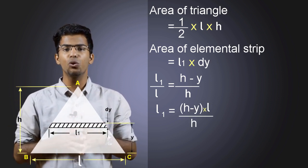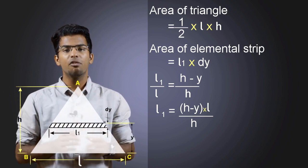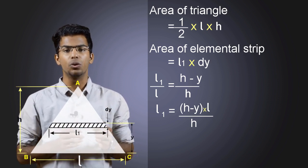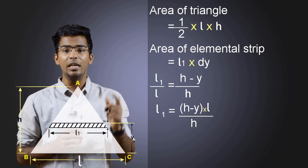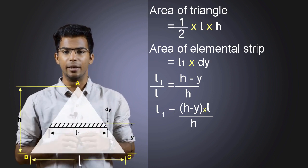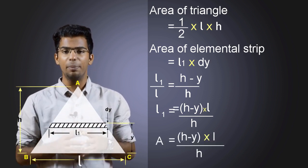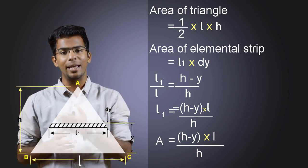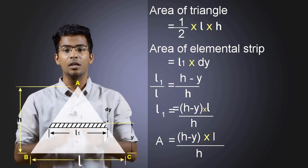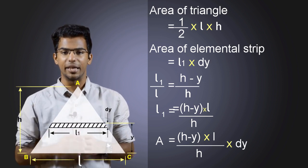This is the new equation for L1. We will substitute the value of L1 in our equation for area. The area will be (H minus Y) times L divided by H, multiplied by DY.